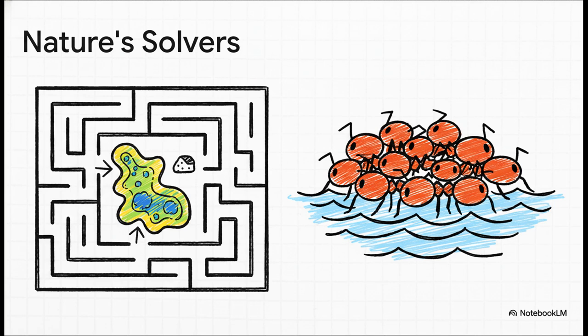This is just wild. You've got slime molds—single-celled organisms with no brain, no central command—and they can work together to solve a maze and find the most efficient path to food. Or look at fire ants. When a flood comes, they link their bodies together to build a living, breathing, unsinkable raft to save the colony. Their incredible functionality doesn't come from some top-down blueprint. It just emerges from simple, local rules.